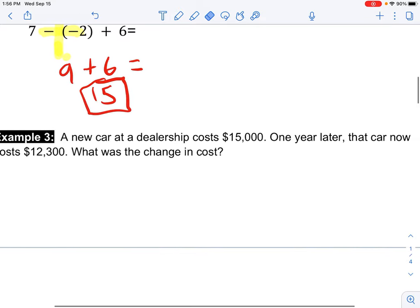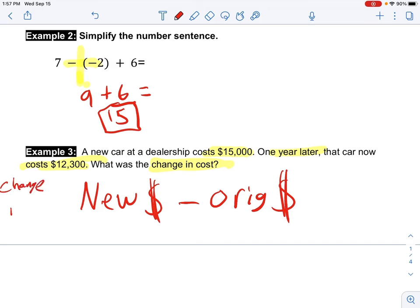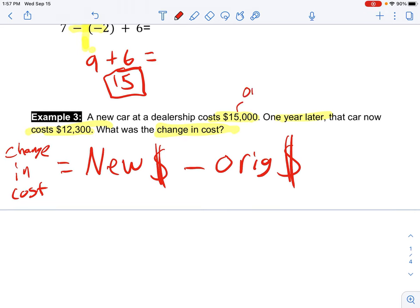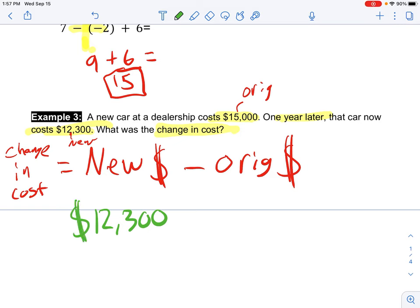Alright, so a new car at a dealership costs $15,000. One year later, that car now costs $12,300. What was the change in cost? Now this is a formula that we're going to use a lot, but you're going to take your new price and you're going to subtract it from your original price. And that's going to tell us what the change in the cost was. Change in cost equals new minus original or new minus old. So this is my original, this is my new. So I'm just going to start by plugging in some values.